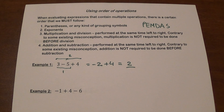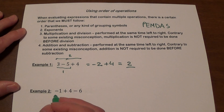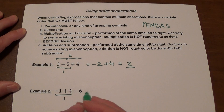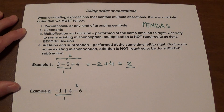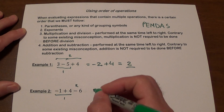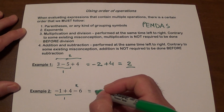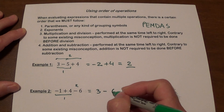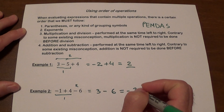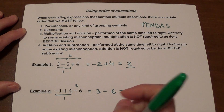Example 2 has only addition and subtraction: negative 1 plus 4 minus 6. We do it left to right — negative 1 plus 4 is 3, and 3 minus 6 gives us negative 3.